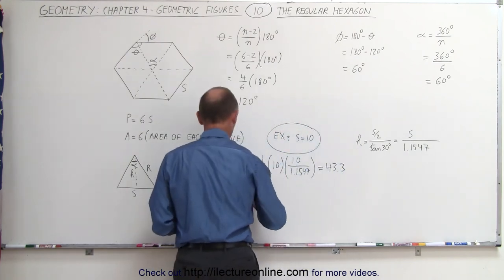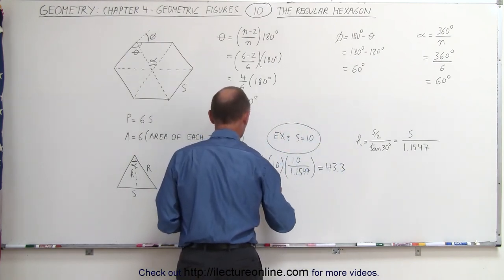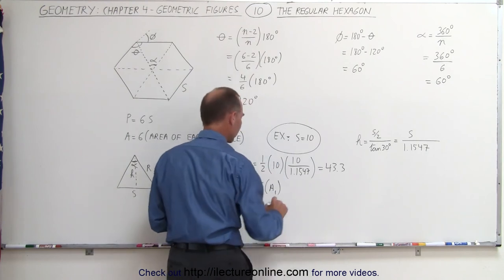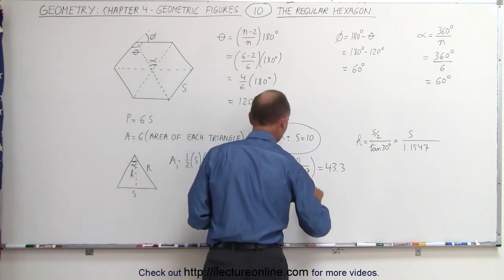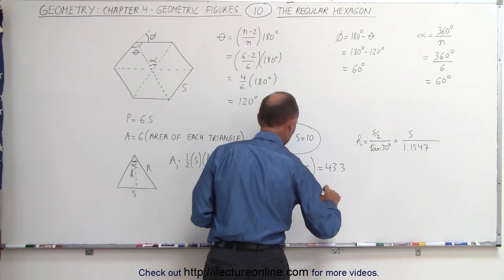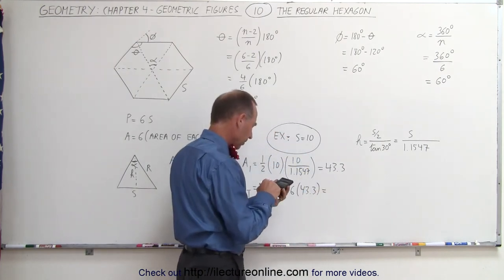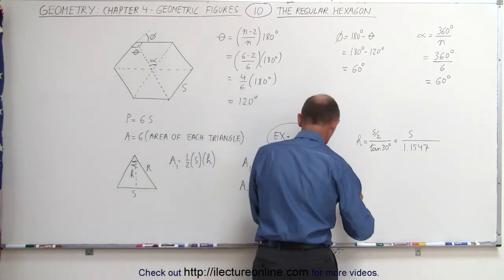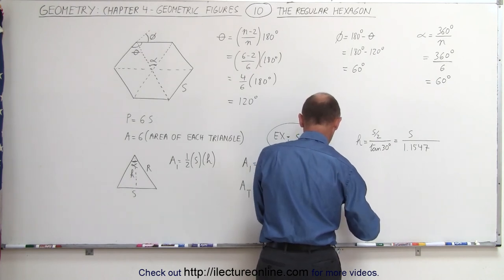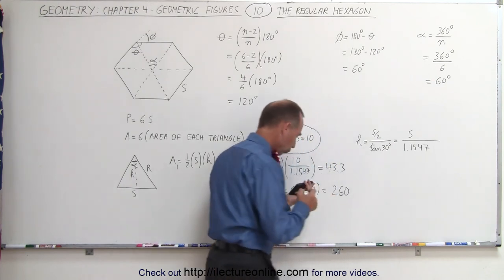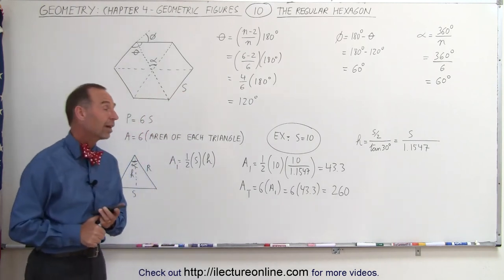And then, of course, to find the total area, area total, which would be six times the area of each triangle, which is equal to 6 times 43.3. And that's going to be equal to times 6 equals, that would be in this case, rounded off to three significant figures, 260 square units.